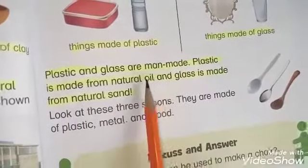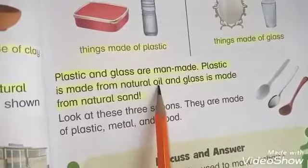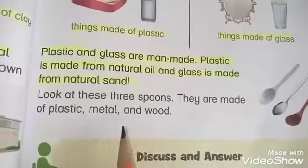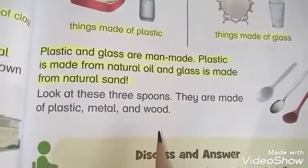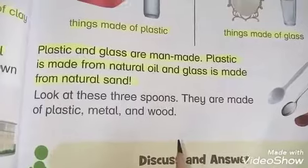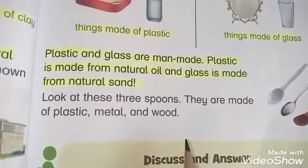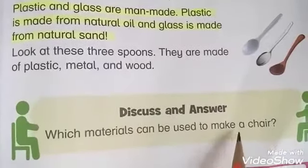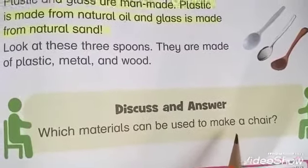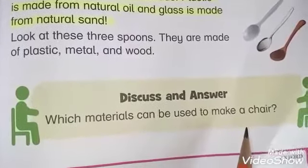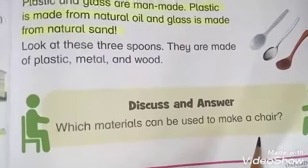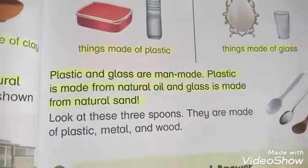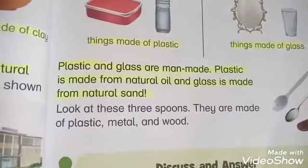Glass is made from natural sand, and plastic is made from oil. So we have read this chapter and covered all the materials. I hope you will understand the reading. We can discuss which materials can be used to make a chair — a chair can be made of wood or metal. Thank you, students, for watching my video. Allah Hafiz.